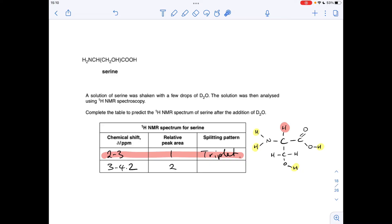And the splitting pattern. So, look at what they're adjacent to. They're adjacent to that single hydrogen. So, 1 plus 1. N plus 1 rule. 1 plus 1 is 2. So, we're going to see a doublet.